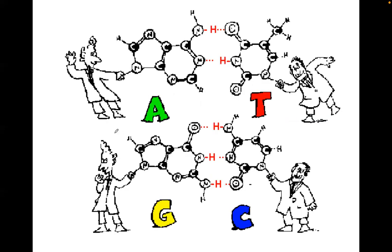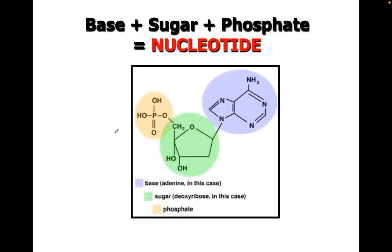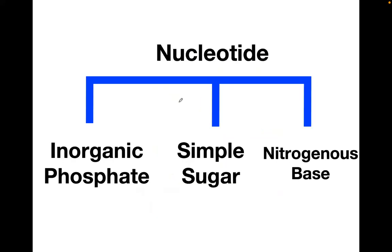Look at the base pairs: A equals T, G equals C. A nucleotide is comprised of a base plus a sugar plus a phosphate. The schematic diagram shows three components: an inorganic phosphate, a simple sugar, and a nitrogenous base.